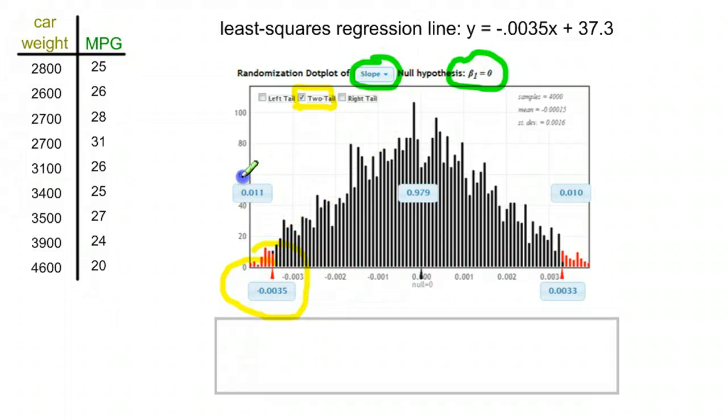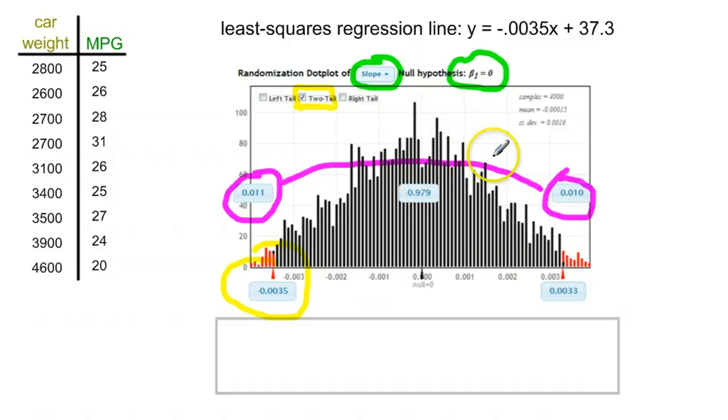Once we set that, we get our ever important p-value. Because it's a two tail test, you need to take both of these p-values and add them together. We get 0.021 as our p-value. So that is less than 0.05. We do reject in most cases.